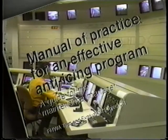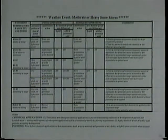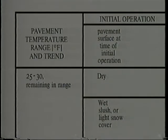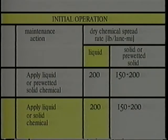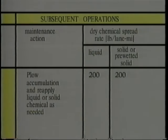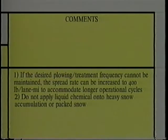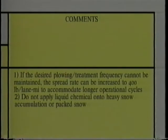It is intended to complement the decision-making and management practices of a systematic anti-icing program so that roads can be efficiently maintained in the best possible conditions. For example, for a moderate or heavy snowstorm with the pavement temperature between 25 and 30 degrees Fahrenheit and the pavement surface is wet, slush, or covered with light snow at the time of the initial operation: a liquid should be applied at a rate of 200 gallons, or a solid chemical at a rate of 150 to 200 pounds of solids per lane mile. Subsequent operations would consist of plowing any accumulation off and reapplying liquid or solid chemical as needed at 200 pounds of solids per lane mile. If the desired plowing treatment frequency cannot be maintained, the application rate can be increased to 400 pounds per lane mile to accommodate longer operational cycles. Do not apply liquid chemicals onto thick snow accumulation or packed snow.